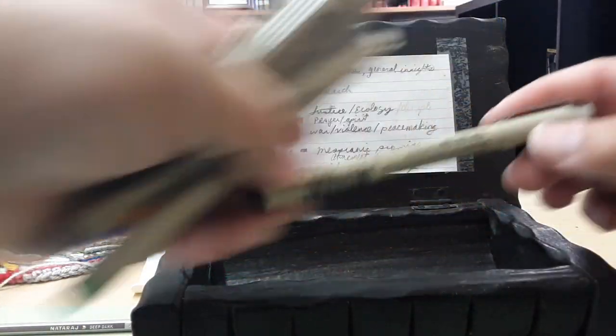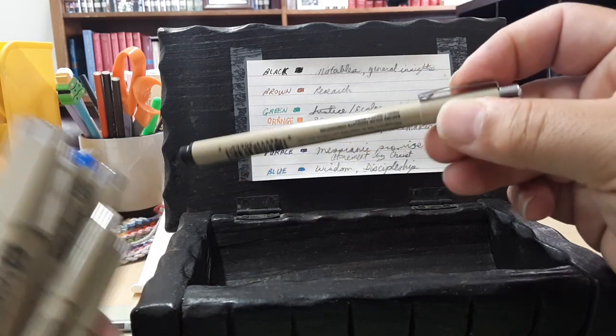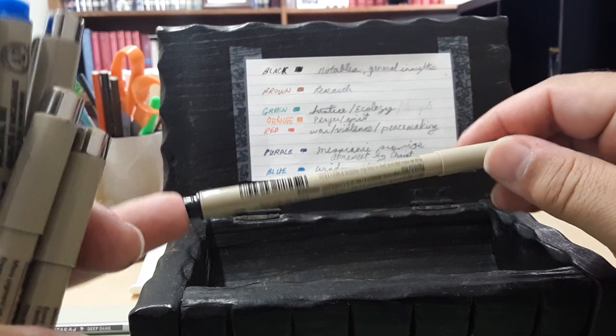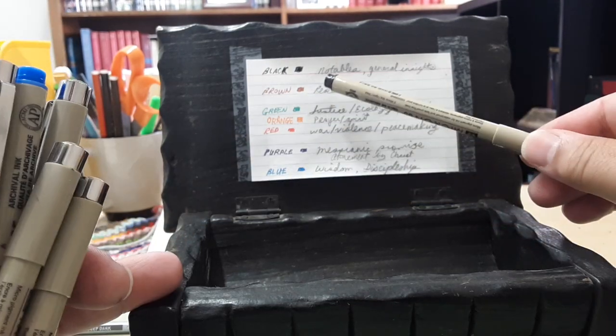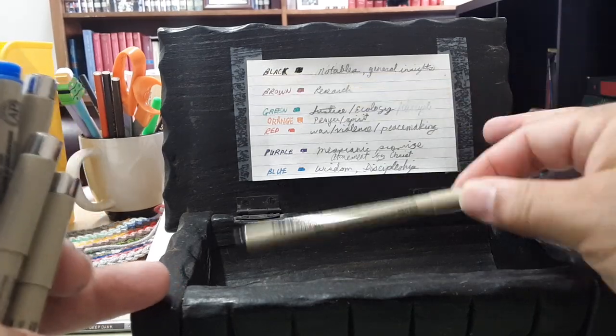All right. So let's go through it. First of all, we have black, which is just notables, general insights, just everyday underlining that don't fit really a unique category. And what I do is my colors are very, very specific categories. So this is the catch-all.